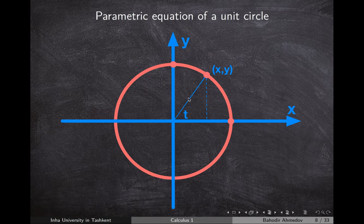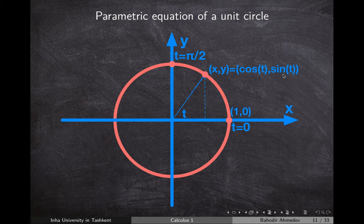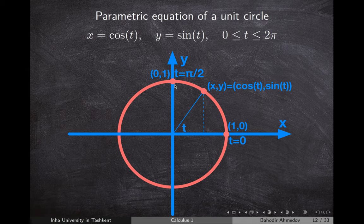Let's start talking about the parametric equation of a circle. I would like to express the x and y coordinates of points along a circle with radius 1 using the two functions cos(t) and sin(t), where the parameter t is the angle between the radius to this point and the x-axis. For example, if t = 0, the point is (1, 0): cos(0) = 1 and sin(0) = 0. If t = π/2, the coordinates are cos(π/2) = 0 and sin(π/2) = 1, giving the point (0, 1).